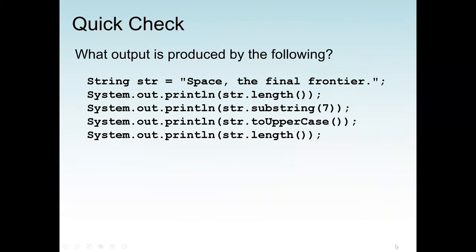Here is a quick check on string methods. Given the string str = ' space, the final frontier', if we call str.length(), we count every character including spaces and the comma — giving us 26. If we call str.substring(7), since only one argument is provided, it means we start at index 7 and go to the end of the string — resulting in 'the final frontier'.